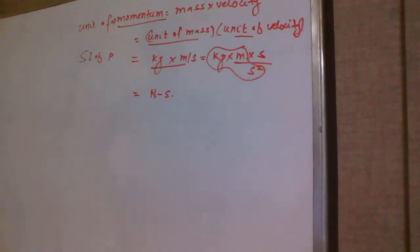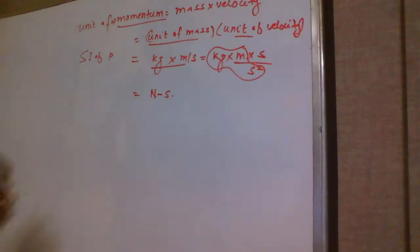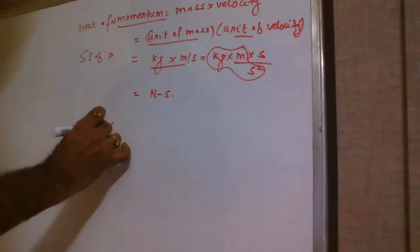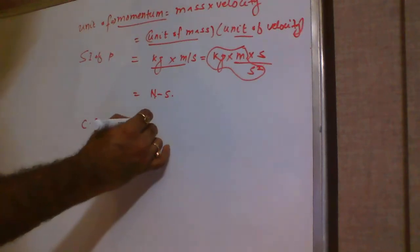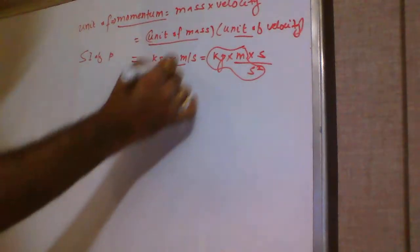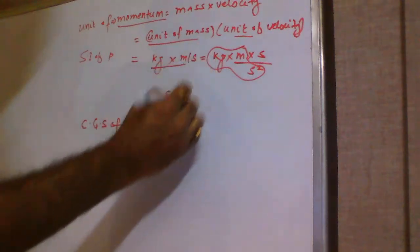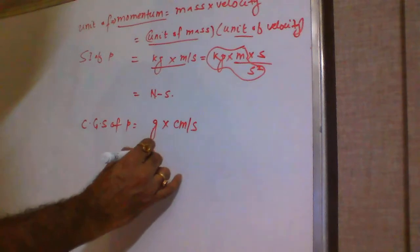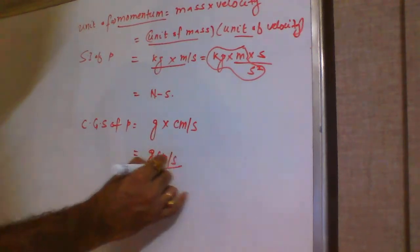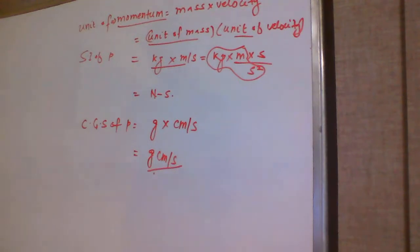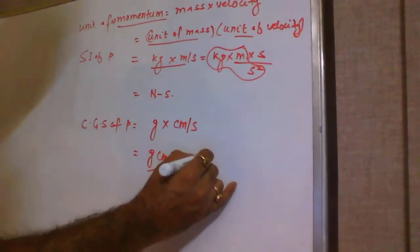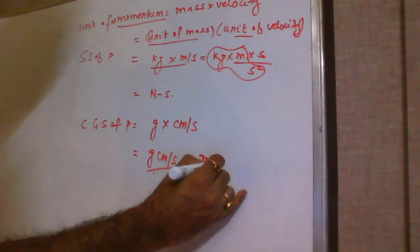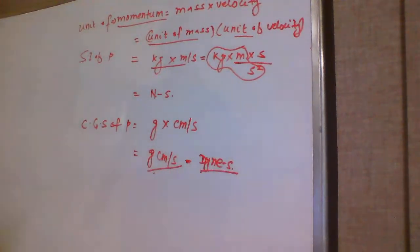Here Newton is the unit of force. In CGS units, the unit of mass is gram and unit of velocity is centimeter per second, so the CGS unit of momentum is gram·centimeter per second, or in terms of force, it will be dyne·second. This is all about the unit of momentum.